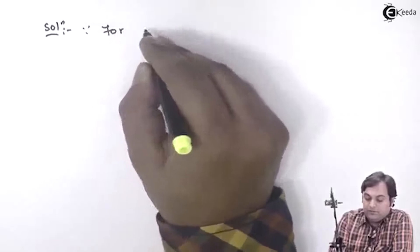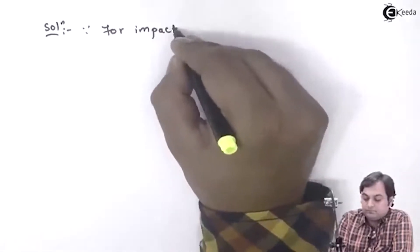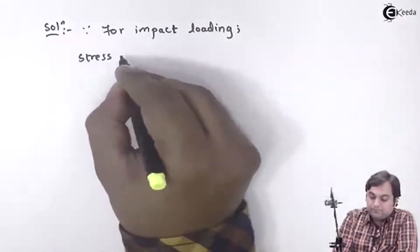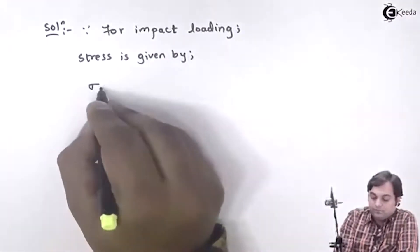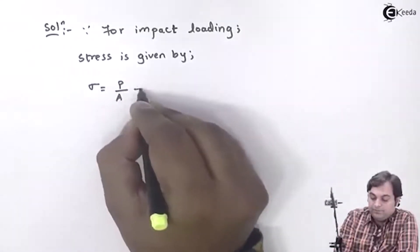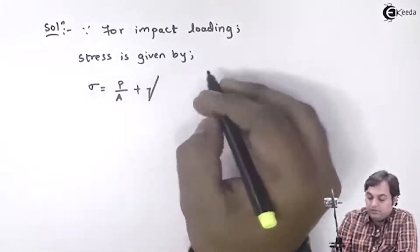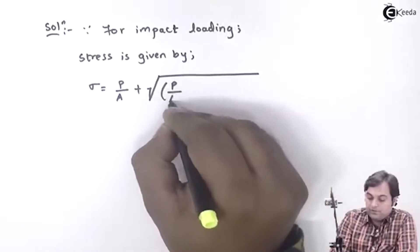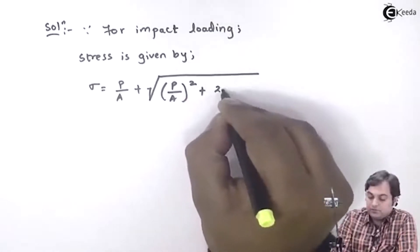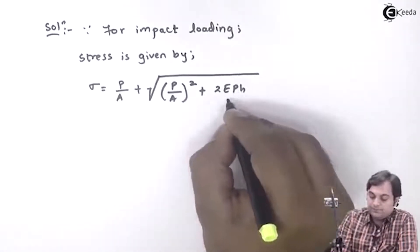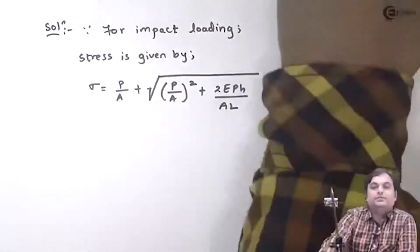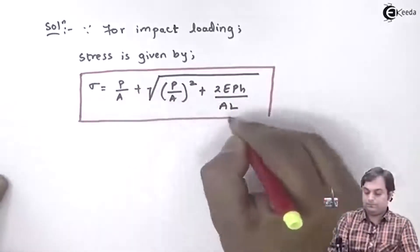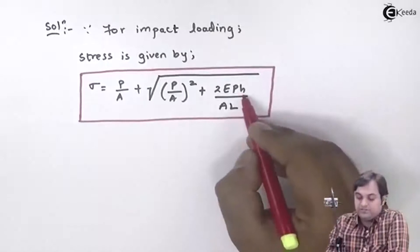For impact loading, stress is given by: σ = P/A + √[(P/A)² + 2EPh/(AL)]. We have to calculate height h.